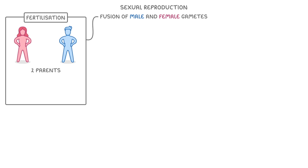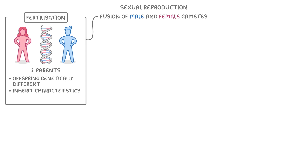Let's start with sexual reproduction. The key point here is that it involves the fusion of male and female gametes, which we call fertilization. And because there are two parents, the offspring contain a mixture of their parents' genes and so are genetically different. This is why you inherit characteristics from both parents, and it means that over generations it introduces lots of variation, as each person is different.